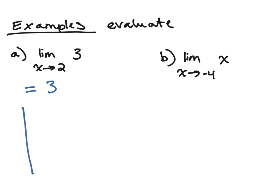Let's think about what this is on a graph. 3 would be the function y equals 3 – that's just a horizontal line. So as I approach 2 from the left and the right, of course I'm going to get 3 as my y value.